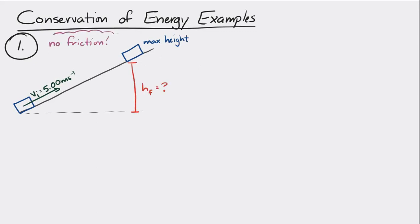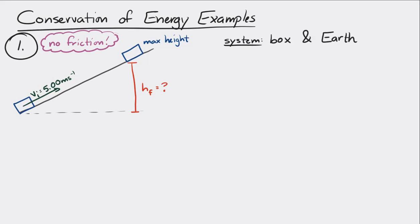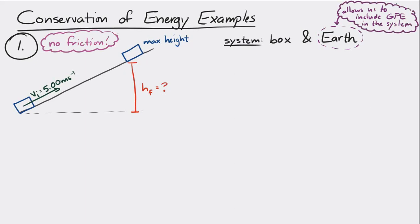I'll draw a little diagram here, and we have to figure out what the system is going to be. We don't have to worry about any other objects except for really the box. So let's make the system the box plus the Earth. It's important to include the Earth because that way we can have gravitational potential energy in our system. If the Earth is not in our system, there can't be any gravitational potential energy.